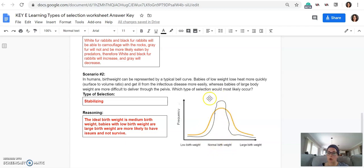So in this example, the normal birth weight, this middle intermediate form, is the more advantageous trait. So over time, this normal birth weight is going to become more common. So this gold bar here, this is the population before, and then the population after, we're going to see a peak, a spike, in the normal birth rates, because again, this is the one that's more advantageous. So the ideal birth weight is the medium birth weight. So babies with low birth weight and large birth weight are more likely to have issues and not survive. So the extremes, low and large birth weight, are not going to be as common. The intermediate form is, which is why this is stabilizing selection.